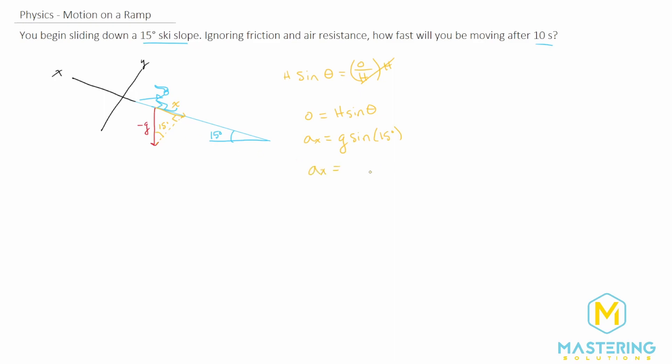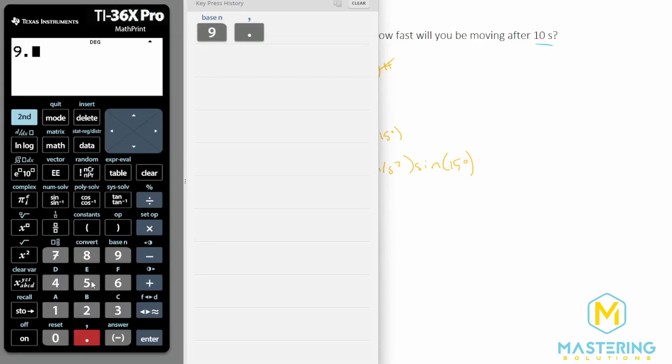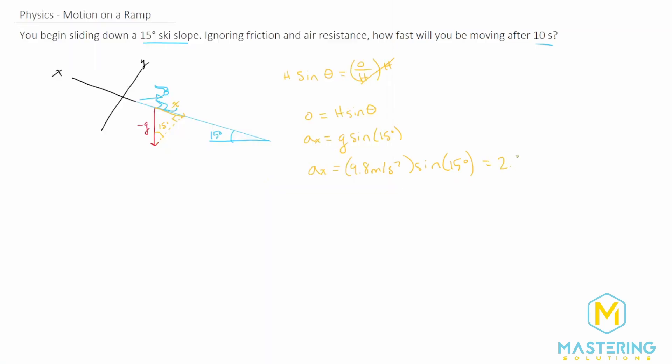So now acceleration in the x, we can plug our values in. We know it's 9.8 meters per second squared. And then we'll times that by the sine of the angle 15 degrees. So we have 9.8 sine 15 gives us 2.54 meters per second squared. So this is how fast we're accelerating down the hill.